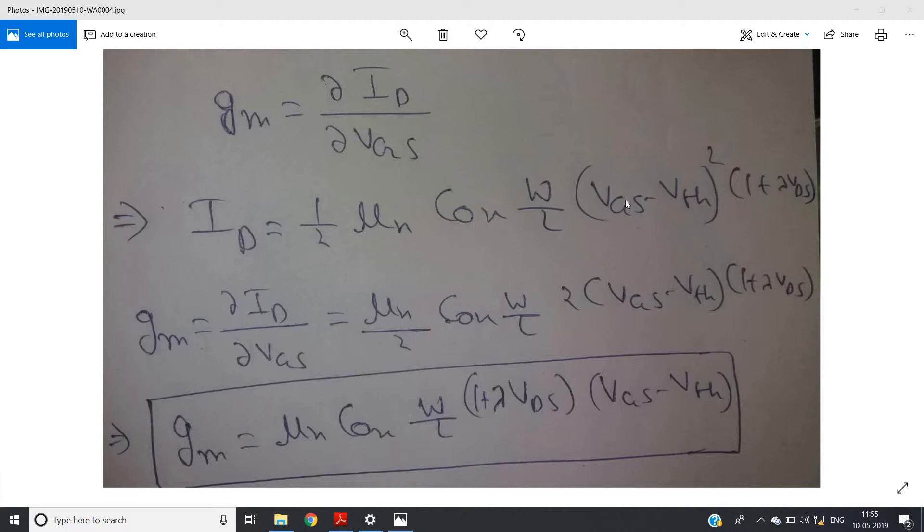× (VGS - Vth)², where Vth is the threshold voltage, multiplied by (1 + λVDS). This (1 + λVDS) term came for the indication of the channel length modulation.